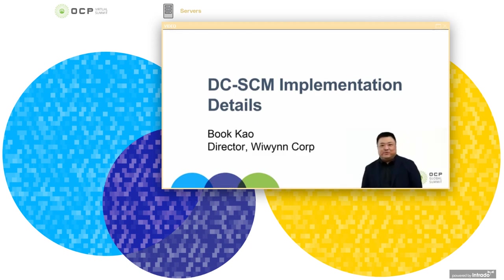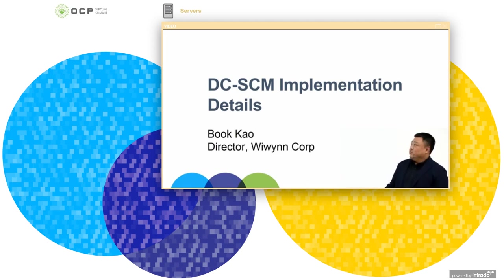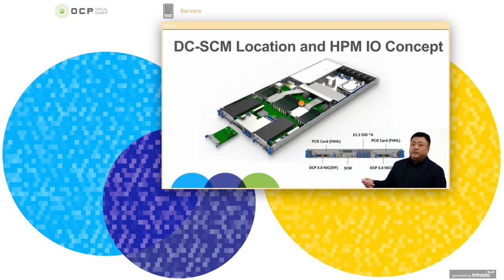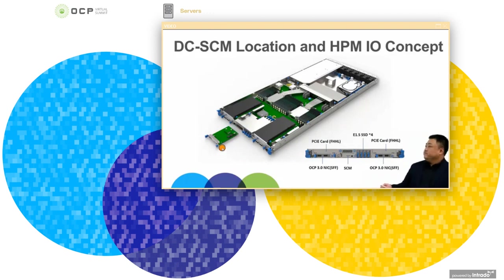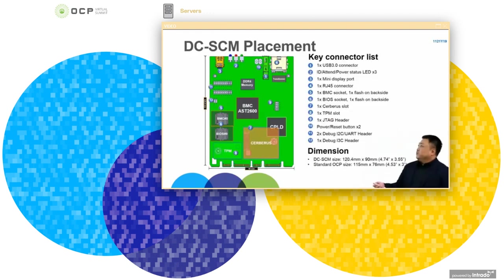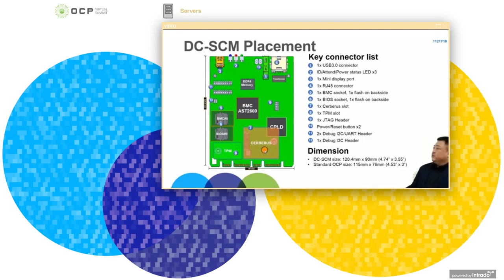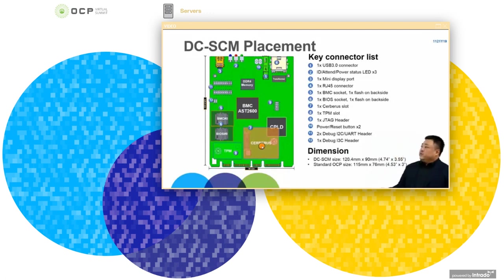Hello, everyone. This is Booker from VBIN. I'm the OEM. I work with the Microsoft Gen9 project. The SCM will be implemented in the Microsoft Gen9 project — it will be placed in the middle area and you can plug it in from the front side. About the SCM placement, you can see all the firmware parts are on the SCM board: BMC path, bridge path, security, and TPM. The special part is serverless — serverless is Microsoft's design security path, providing the SPI path. Without serverless, the SCM cannot power up, and without SCM, the CPU board cannot power up.